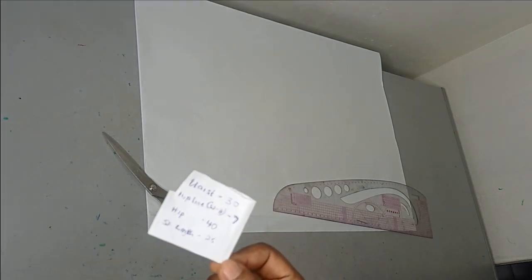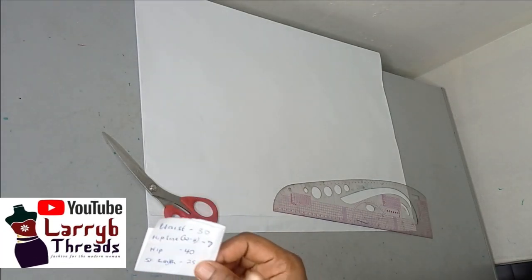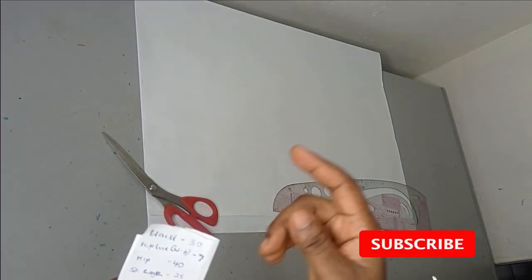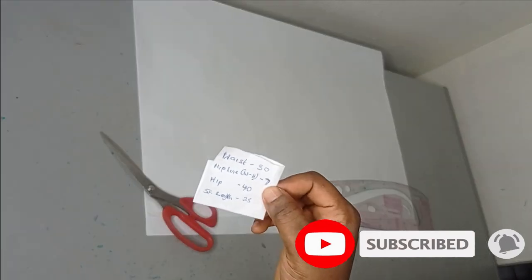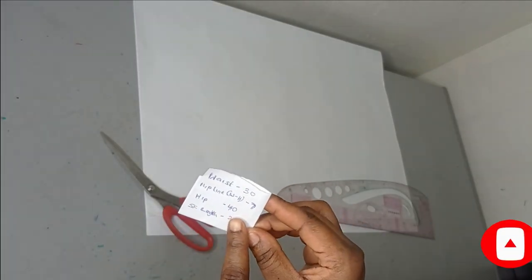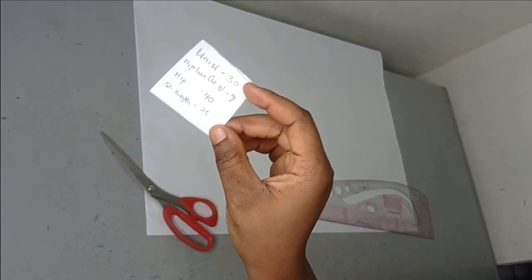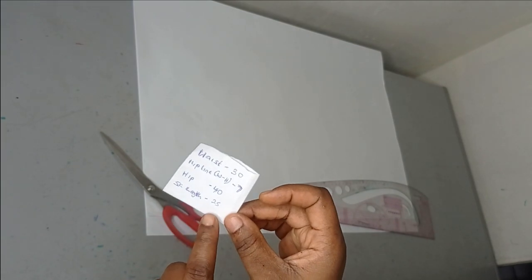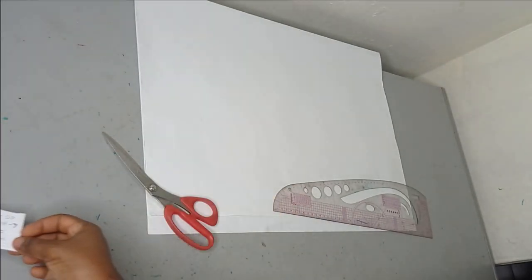The measurements I'll be working with are: waist 30 inches, hip line — which is your measurement from your waist to your hip vertically — that's 7 inches, hip circumference is 40 inches, waist circumference is around your waist where you place your skirt, and the skirt length is 25 inches.